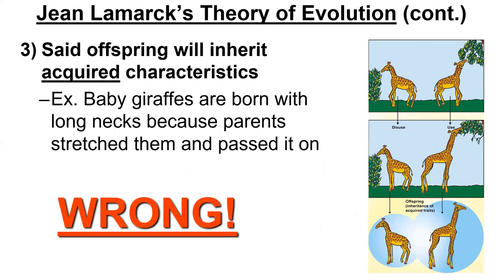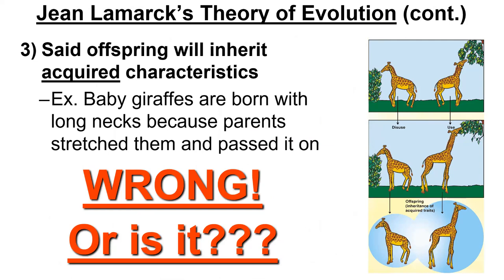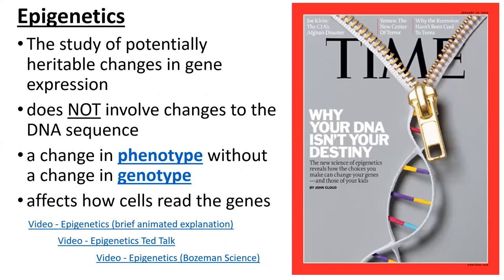A little side note dipping back into our genetics: we do now know that there are things that can be passed on to the next generation without actually affecting DNA. This is a concept called epigenetics. We have chemical tags on our DNA that cause it to tightly wind up and not be expressed, or loosen up and be expressed. These things we're finding can be passed down from generation to generation. There are methyl and acetyl molecules that do this to our DNA, and that can be passed on from generation to generation. So from that idea, Lamarck was not completely wrong — but Lamarck wasn't talking about that because he knew nothing about epigenetics or DNA genes.